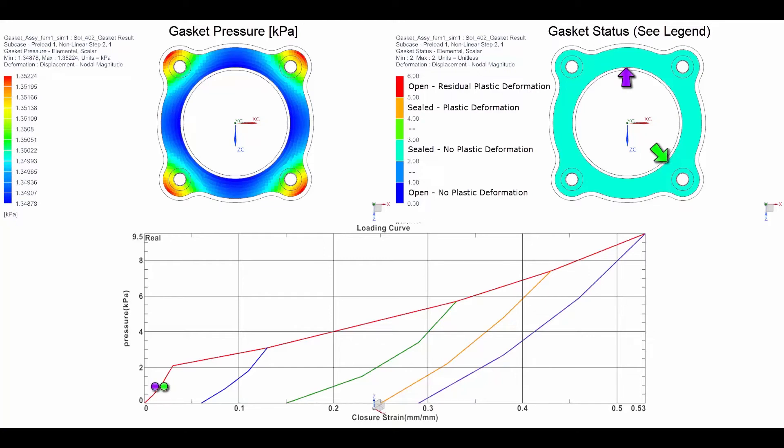In the first subcase, the preload is equal in the four bolts and the gasket pressure is below the yield pressure everywhere. Therefore, the status is sealed without plastic deformation.